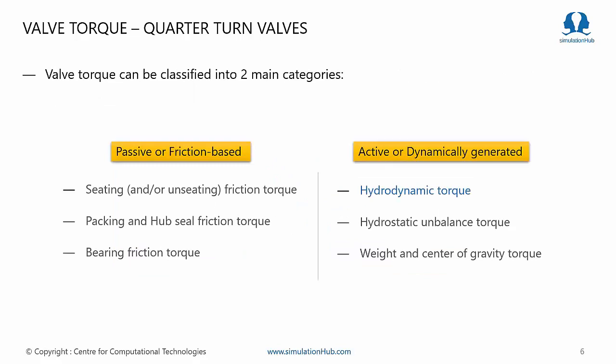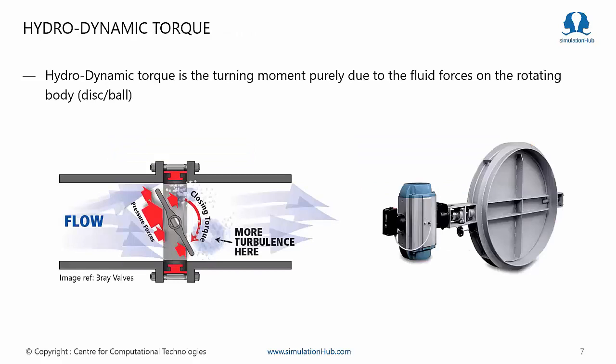Based on the type of resistance, valve torque is classified into two categories. One is friction-based, arising because the rotating body comes in contact with the seating, packing, hub, and seal. The other is dynamically generated torque, which occurs due to fluid flow. Under the dynamically generated category comes our topic of interest: hydrodynamic torque.